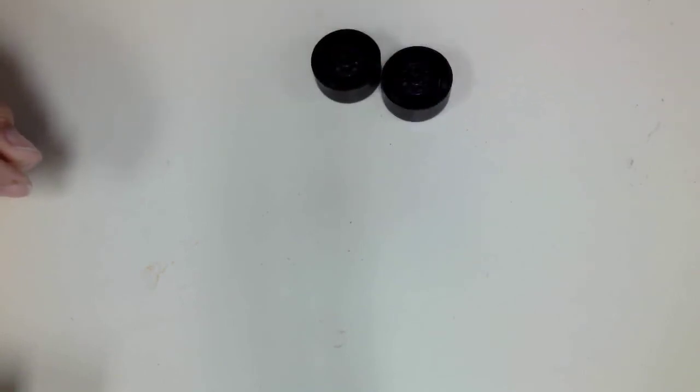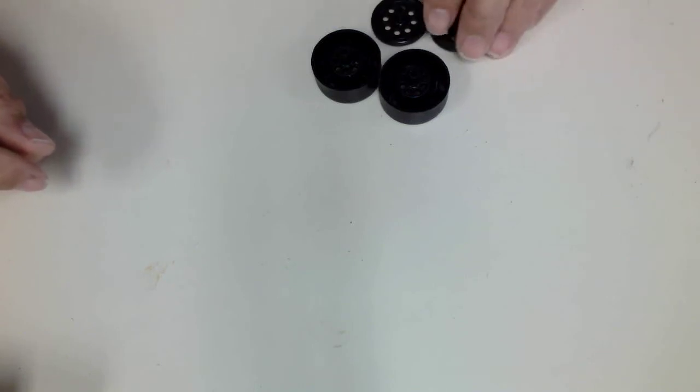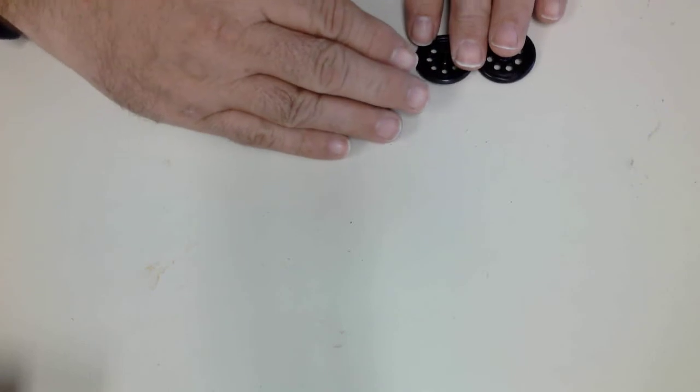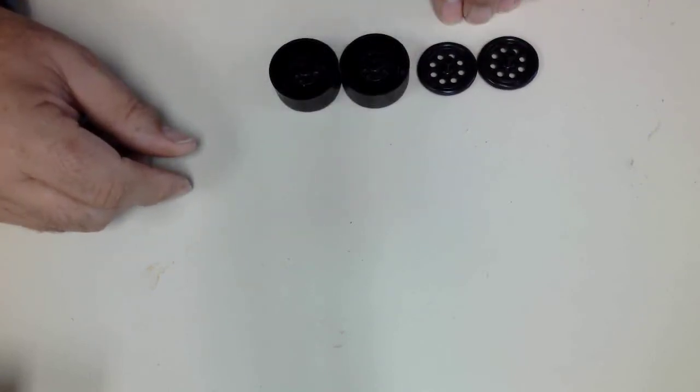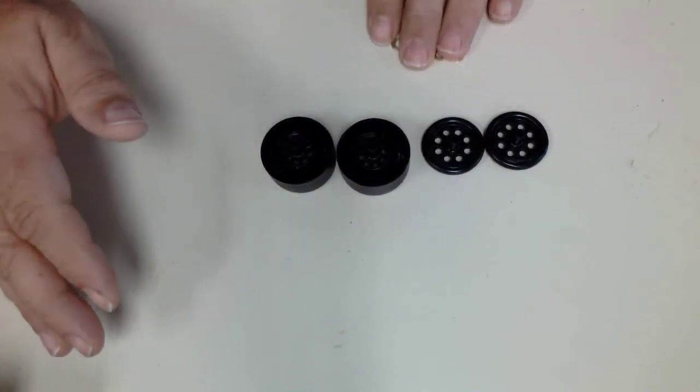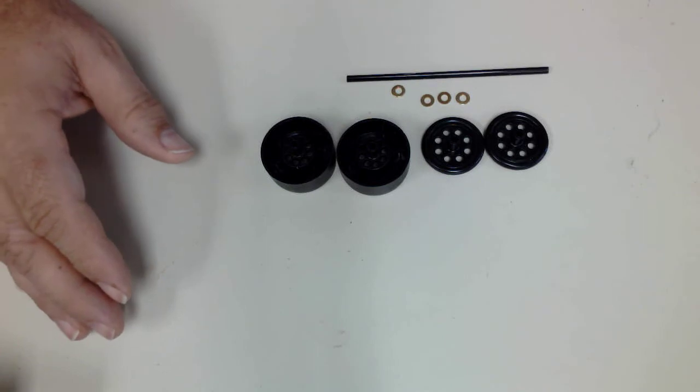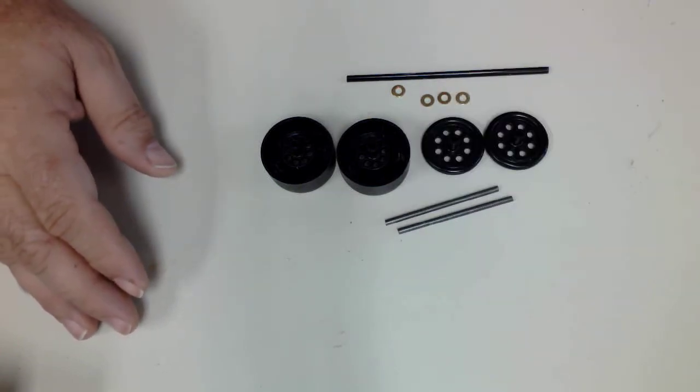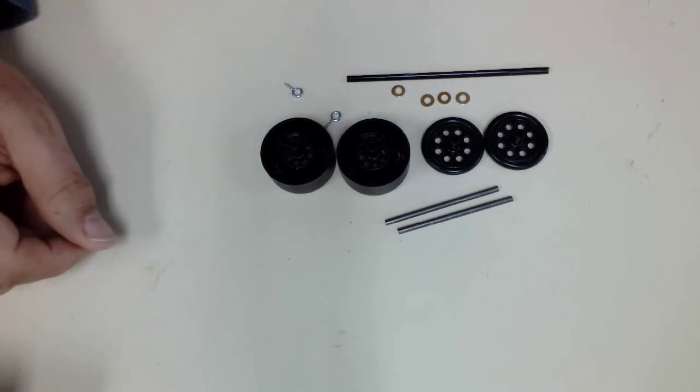You will need two large wheels, two small wheels. Depending on the specifications, you may be allowed to use four small wheels or four large wheels, or two and two. For this demonstration, I'm going to do two of each. You'll also need four brass washers, a straw, two axles, and two screw eyes.